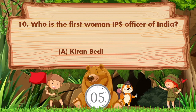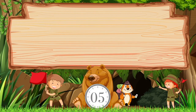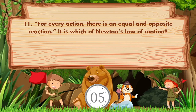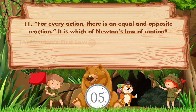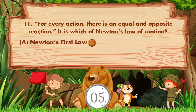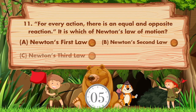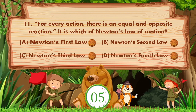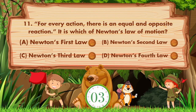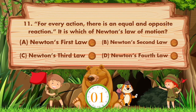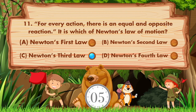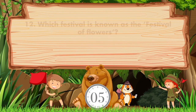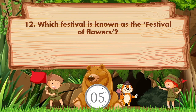The answer is option A, Kiran Bedi. For every action there is an equal and opposite reaction — it is which of Newton's laws of motion? Option A is Newton's first law, B is Newton's second law, C is Newton's third law, D is Newton's fourth law. The answer is option C, Newton's third law.